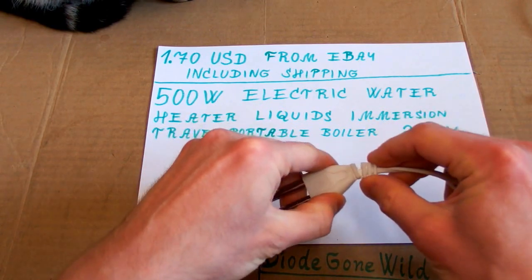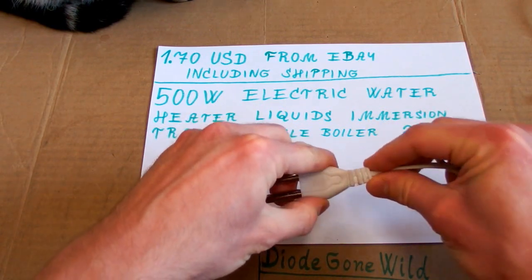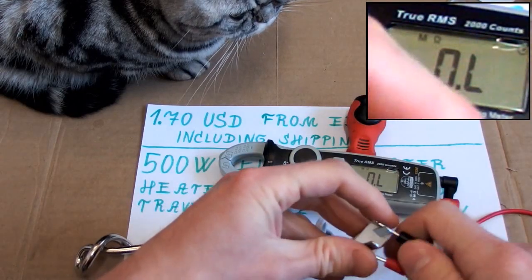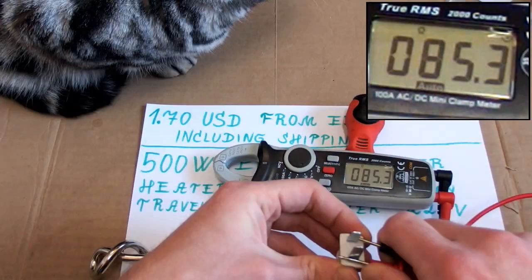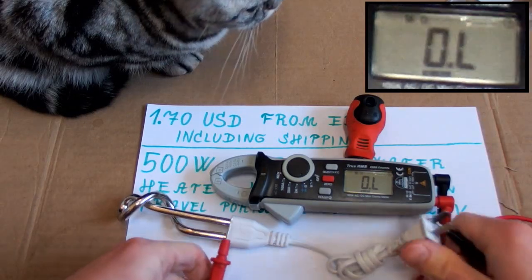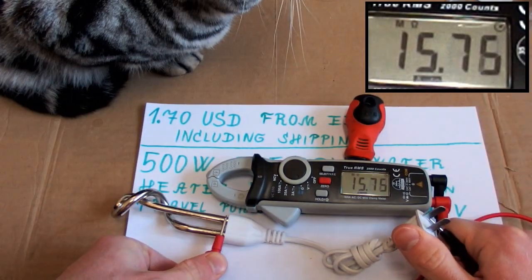And so the resistance of the heating element is about 85 ohms. Now is it isolated from this metal? 15 mega ohms.